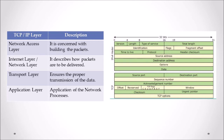The TCP/IP model has four layers: the network access layer, internet layer, transport layer, and application layer. The network access layer is concerned with building data packets. The internet layer describes how packets are to be delivered. The transport layer ensures proper and successful data transmission. The application layer processes network protocols — including HTTP, HTTPS, FTP, and SMTP (Simple Mail Transfer Protocol for email).